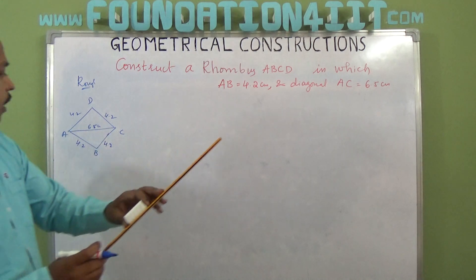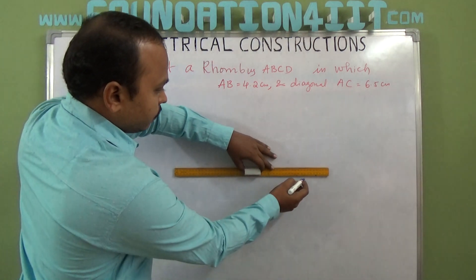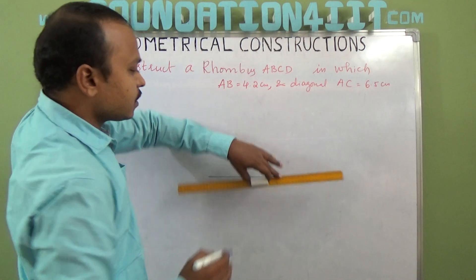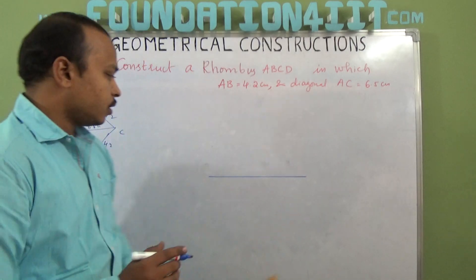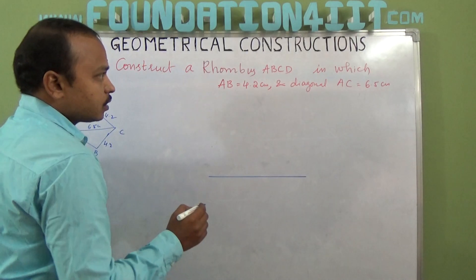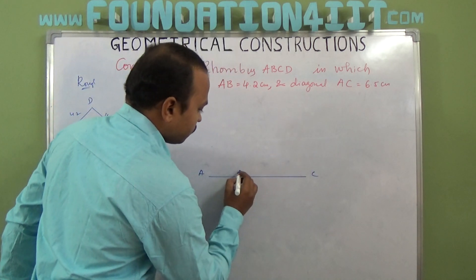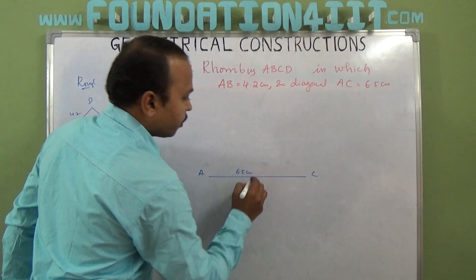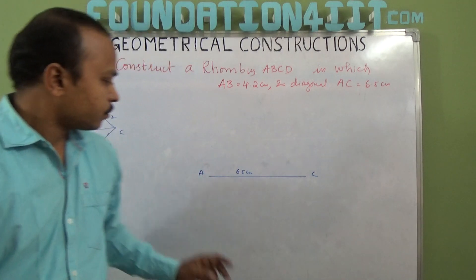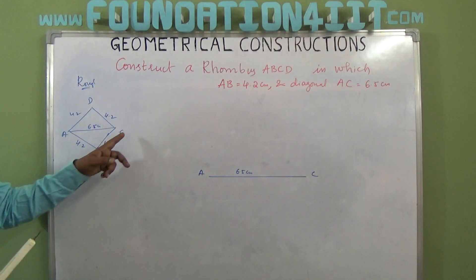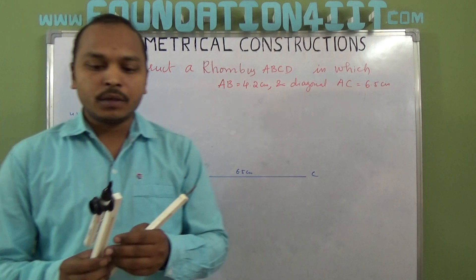Now I'm taking AC directly. Every side is equal, so I'm taking A to C as 6.5 centimeters. AC is 6.5 centimeters, the diagonal.